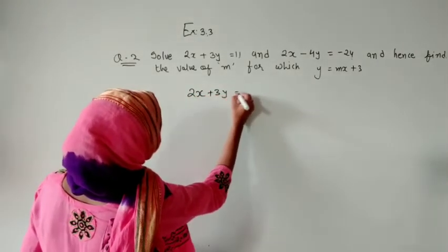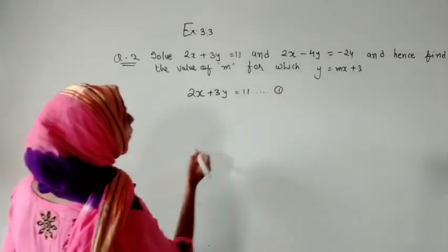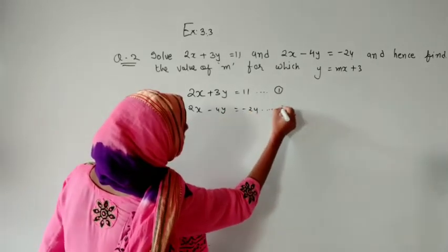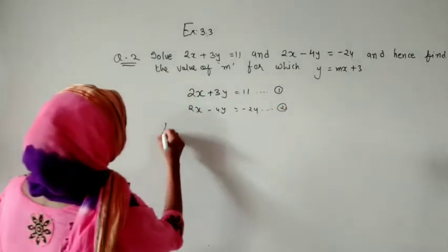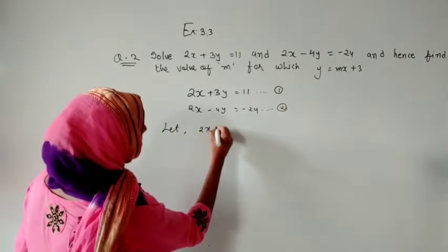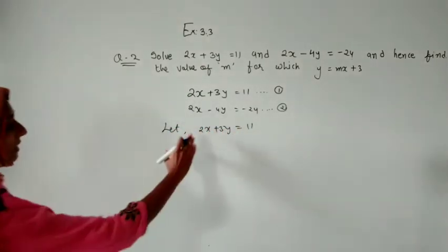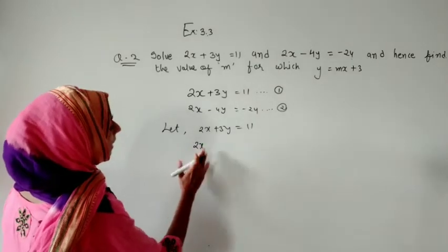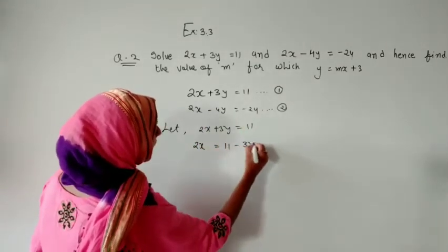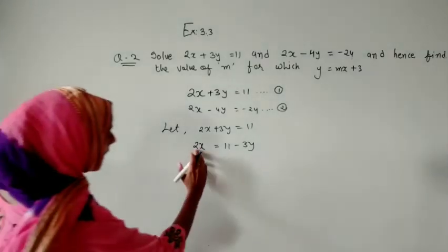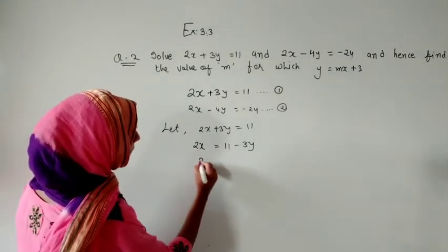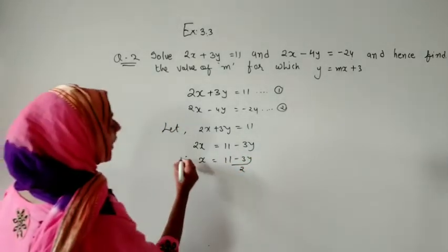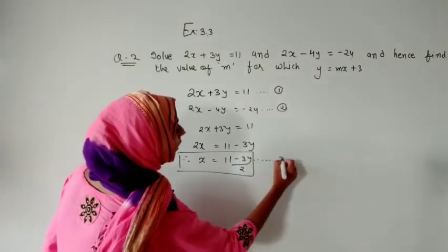So equation number 1 is 2x plus 3y equals 11, and equation number 2 is 2x minus 4y equals minus 24. Let us take the first equation: 2x plus 3y equals 11. We shift 3y to the other side, so 2x equals 11 minus 3y. Dividing both sides by 2 gives x equals (11 minus 3y) divided by 2. This is our equation number 3.